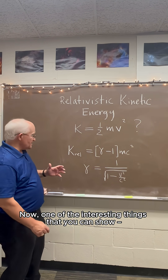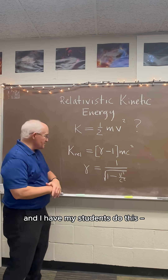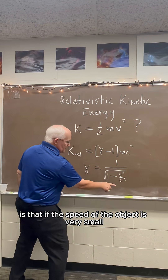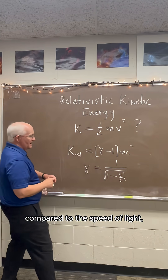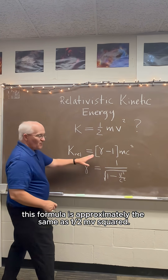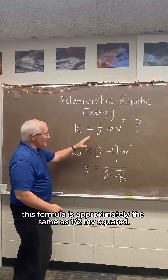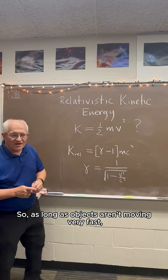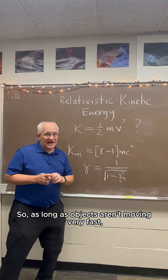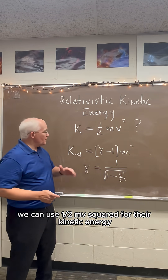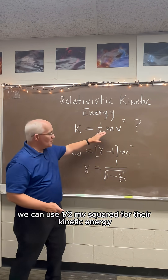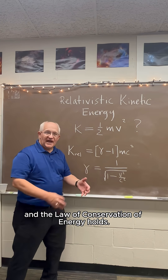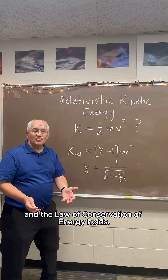One of the interesting things that you can show — and I have my students do this — is that if the speed of the object is very small compared to the speed of light, this formula is approximately the same as one-half mv squared. So as long as objects aren't moving very fast, we can use one-half mv squared for their kinetic energy and the law of conservation of energy holds.